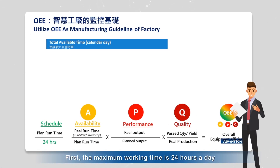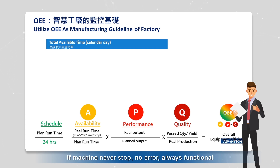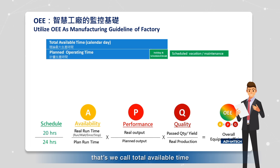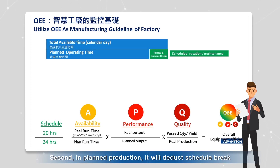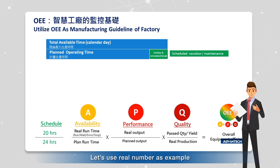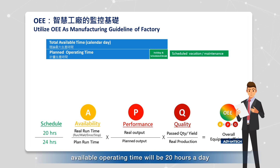First, the maximum working time is 24 hours a day. If a machine never stops, has no errors, and is always functional, that's what we call total available time. Second, in planned production, it will deduct scheduled breaks such as holidays and maintenance breaks. For example, if there are 4 hours of rest in one day, available operating time will be 20 hours a day.